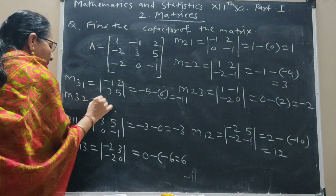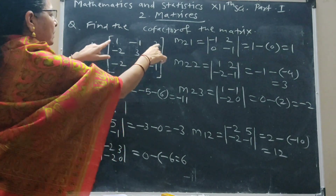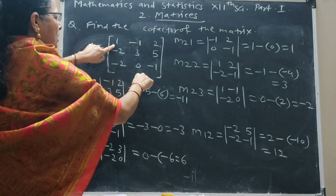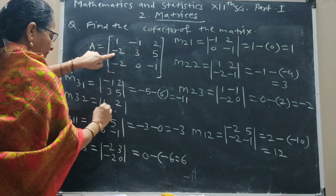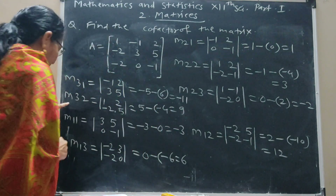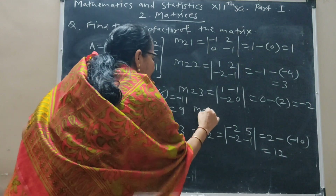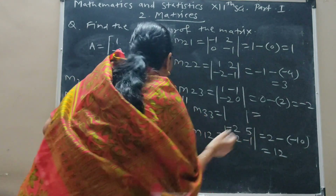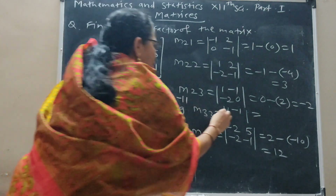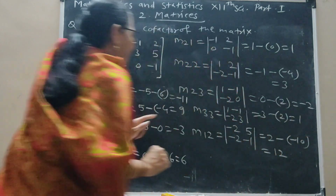M32: delete the third row and second column. Remaining elements are 1, 2; minus 2, 5. This gives 5 minus (minus 4), equals 9. So M32 = 9. Next M33: delete the third row and third column. Remaining elements are 1, minus 1; minus 2, 3. This gives 3 minus 2, equals 1. So M33 = 1.